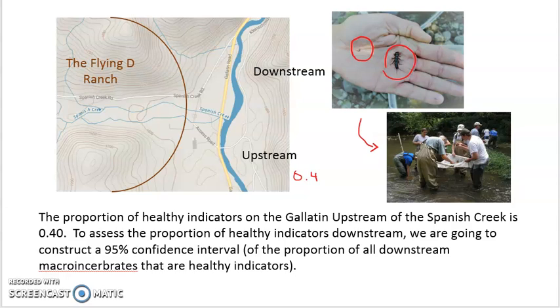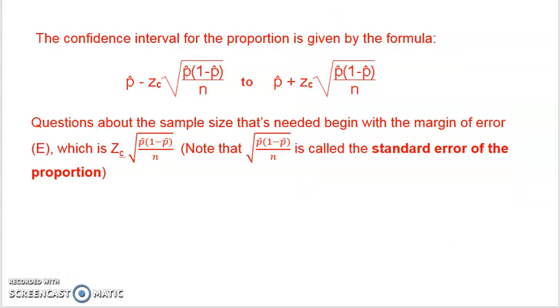So what we did is we constructed, in the earlier video, a 95% confidence interval for the proportion of all macroinvertebrates downstream that are healthy indicators. The 95% confidence interval, or any confidence interval for the proportion, is given by the formula. The formula is given right here, the lower bound and the upper bound.